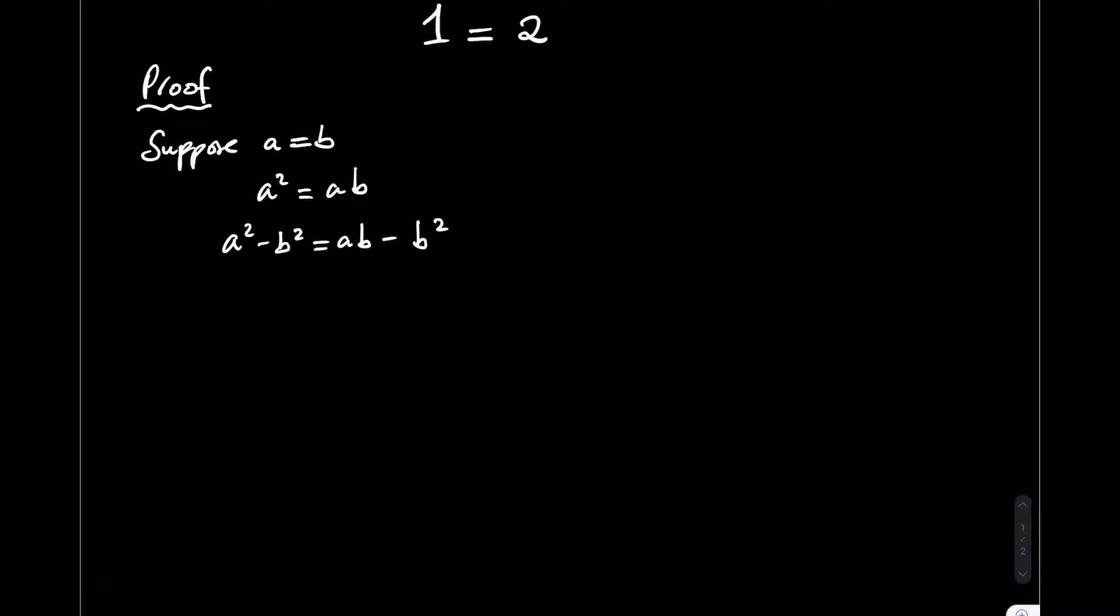I can factorise the left hand side using the difference of two squares to give me A minus B in brackets, A plus B in brackets is equal to. I've got a common factor of B on the right hand side. I can take out the B and in brackets I can write A minus B.